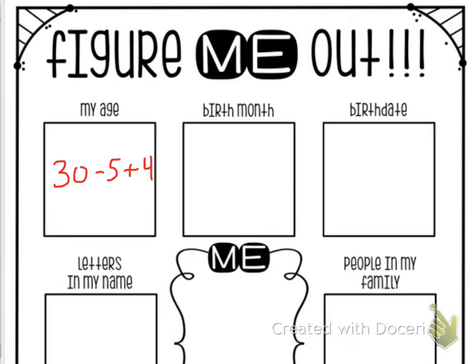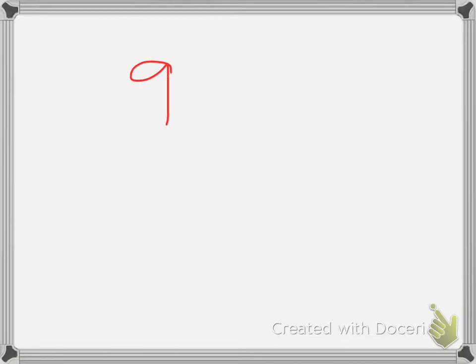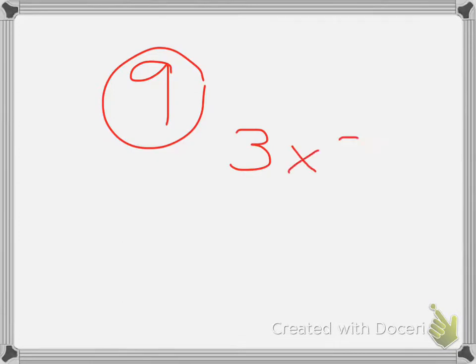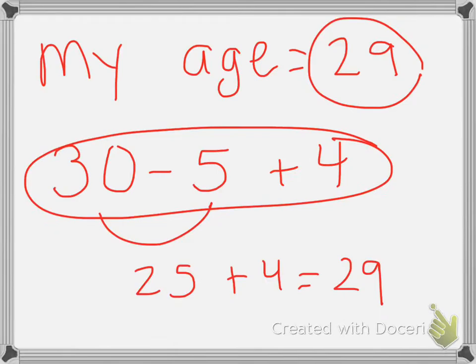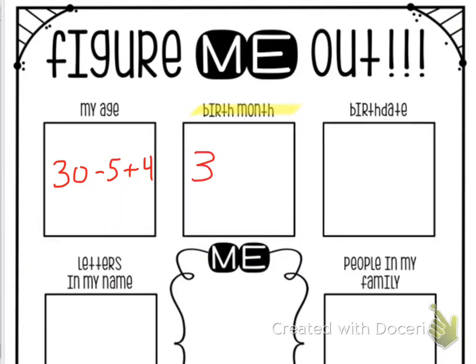I'll do one more example. If I were to do birth month — well, my birth month is September. September is the 9th month of the year, so I need to use addition, subtraction, multiplication, or division to come up with an answer of 9. Maybe I'll think of multiplication this time. What two factors could I multiply together to get 9? 3 times 3 equals 9. So I'm going to put 3 times 3 in the birth month box.